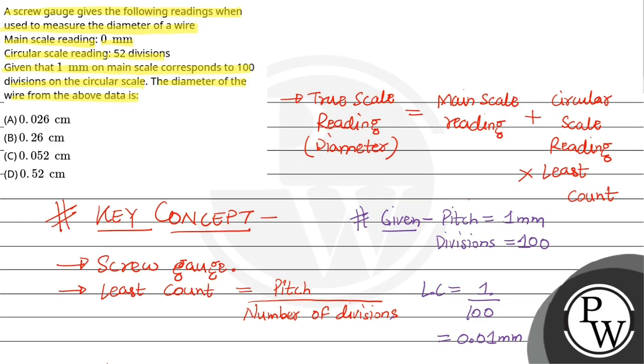We know that 1 centimeter equals 10 millimeter, so 0.52 mm equals 0.052 centimeter. This is the diameter. So the correct answer is option C: the diameter of the wire is 0.052 centimeter. Hope you understood it well. Best of luck!